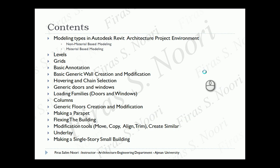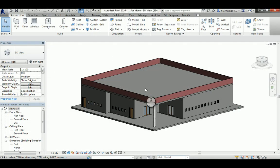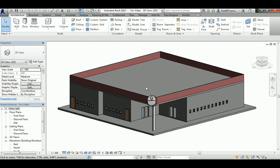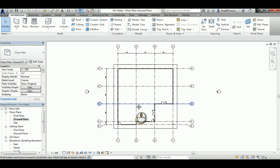We're going to focus on the modeling types in Autodesk Revit Architecture specifically in the project environment - whether it's non-material based or material based. Then we'll go through basics including levels, grid, basic annotation, generic wall creation, modification, hovering, chain selection, generic doors and windows, loading families, columns, generating floors, making parapets, flexing the building, and modification tools - making a single story for a small basic building on a seven by seven grid.